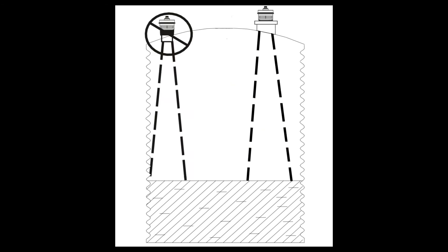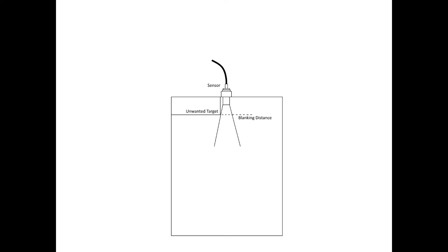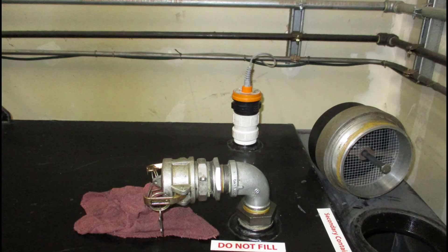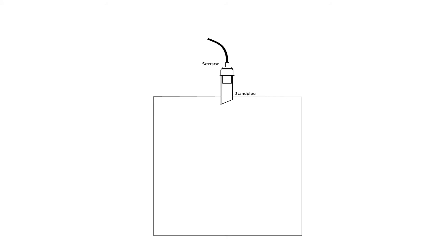Avoid mounting the sensor next to the tank wall, as this may inadvertently be seen as a target by the sensor. The distance from the sensor to the closest possible target should always be further than the blanking distance of the sensor. In applications where headroom does not allow this, a standpipe may be used to mount the sensor above the tank. The standpipe should be smooth and straight with no joints, burrs, or obstructions. If possible, the diameter should be one-half the length.